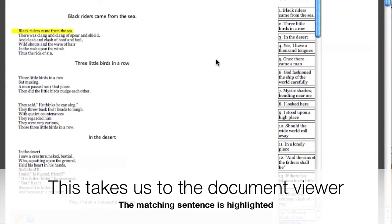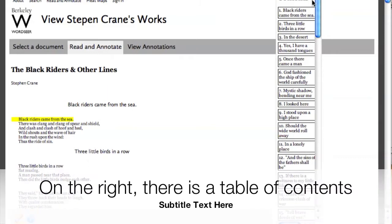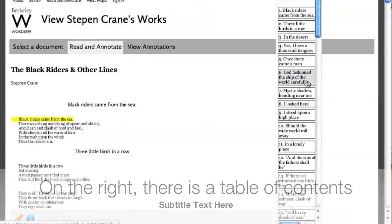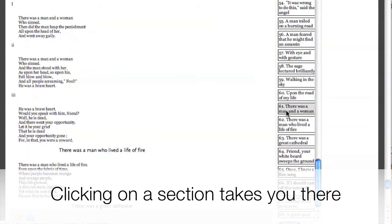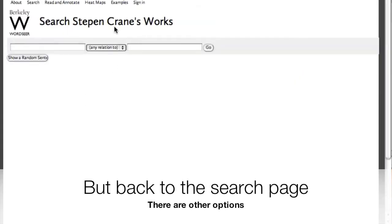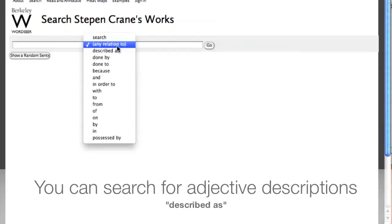I can click the book icon to go to the document viewer, which can be accessed under read and annotate. The document viewer is augmented with a list of contents on the side. Clicking on any of these takes me to that section of the text. Going back to search, there are other options in the drop-down menu.